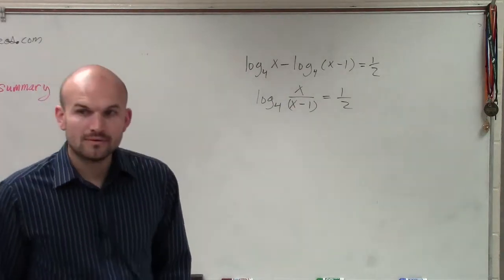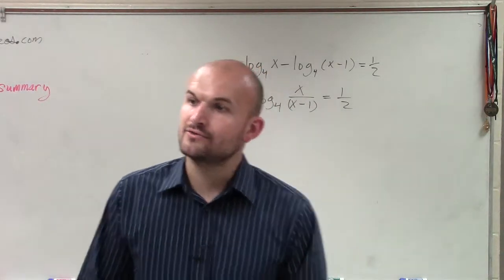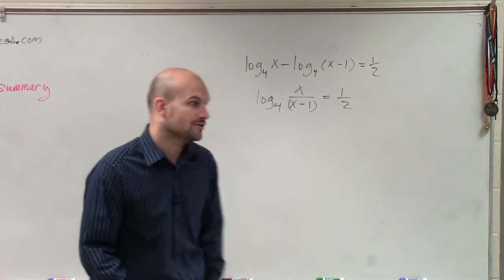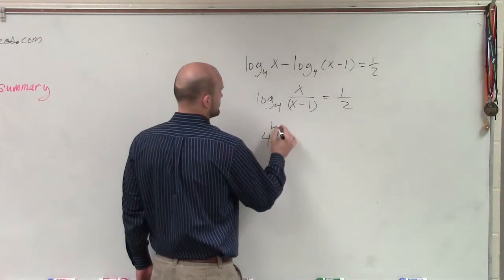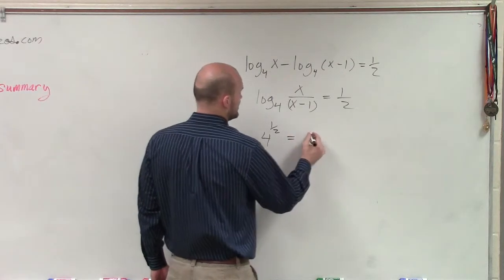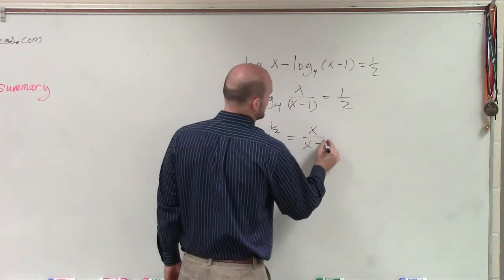All right? So now, I can rewrite this into exponential form, which would be 4 to the 1/2 power equals x over x minus 1.